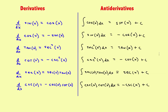Let's take a look at some basic integrals using the trig functions. Before we start with the antiderivatives, let's first take a look at the derivatives again. The derivative of sine is cosine, the derivative of cosine is negative sine, the derivative of tangent is secant squared, the derivative of cotangent is negative cosecant squared, the derivative of secant is secant tangent, and finally the derivative of cosecant is negative cosecant cotangent.